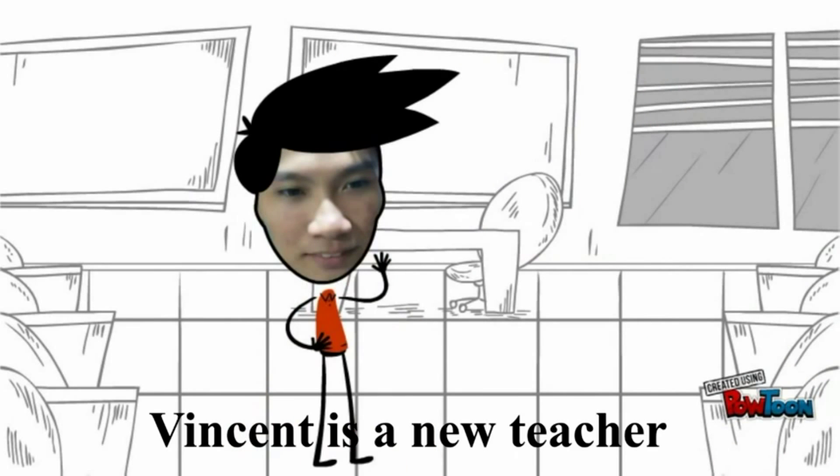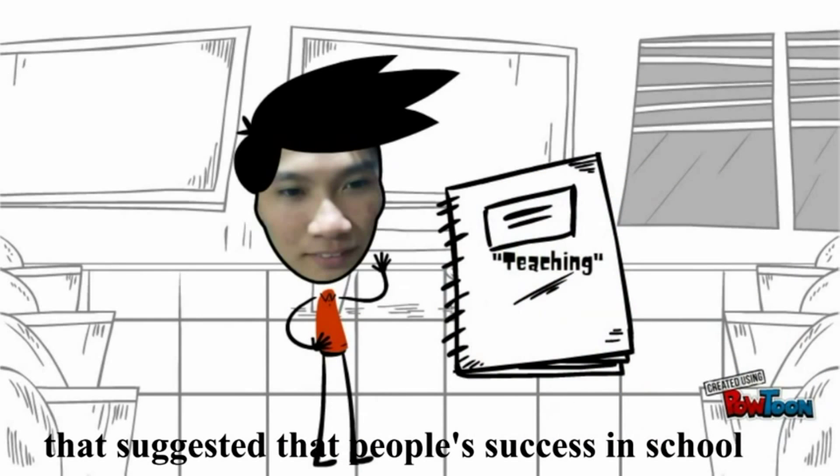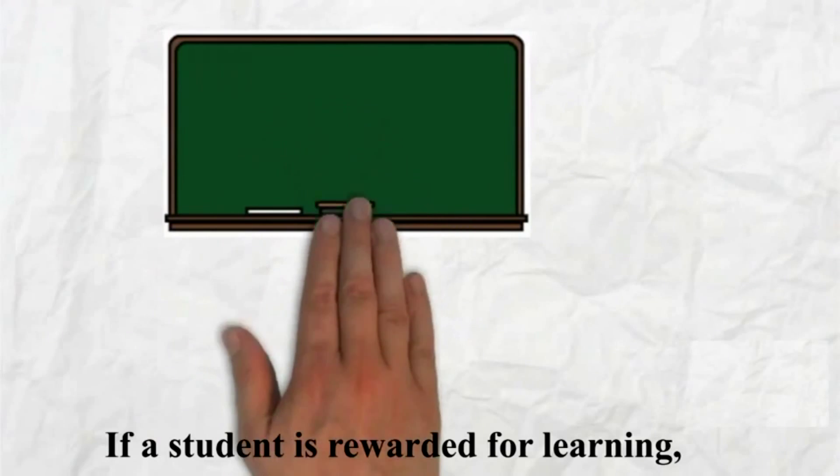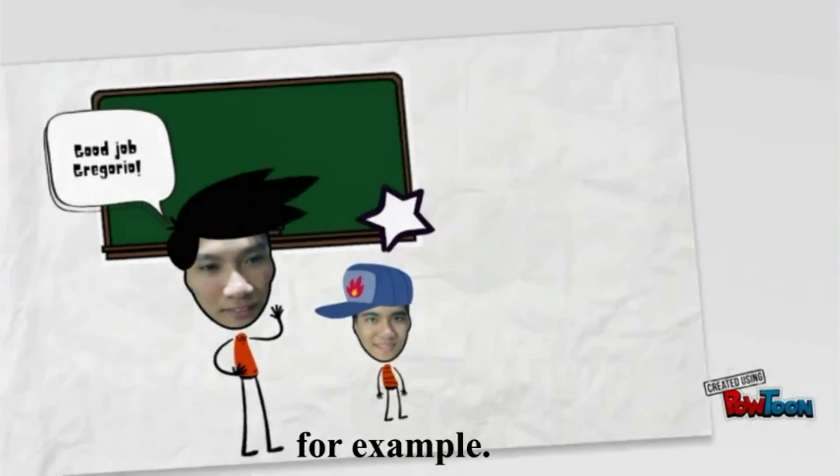Vincent is a new teacher, and he recently read a book on teaching that suggested that people's success in school is closely tied to what happens around them. If a student is rewarded for learning, he or she is likely to continue to learn, for example.